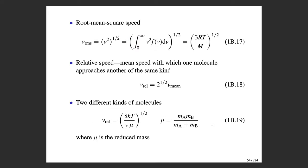Another important speed is the root mean squared speed, or RMS speed. It's the square root of the mean of the speed squared: you take speed squared times the distribution function, integrate to get the mean, and then take the square root. Working through the calculus gives an expression that again increases with temperature and decreases with increasing molar mass.